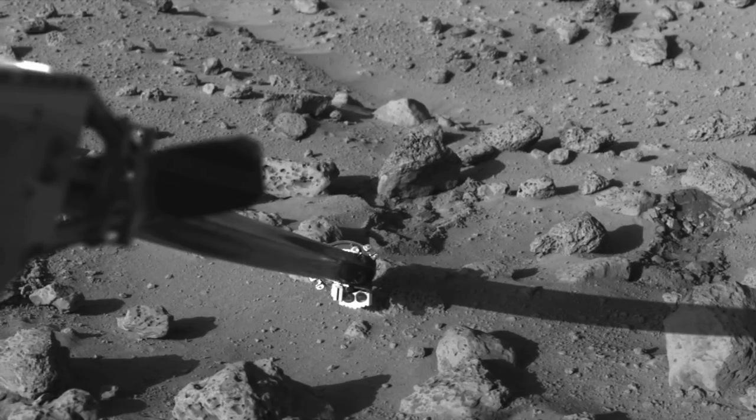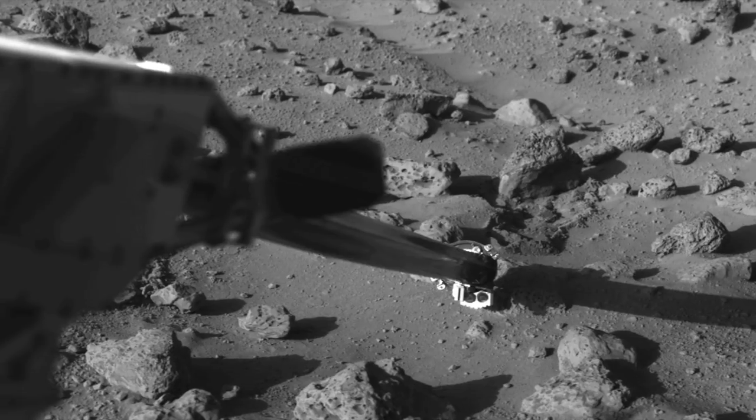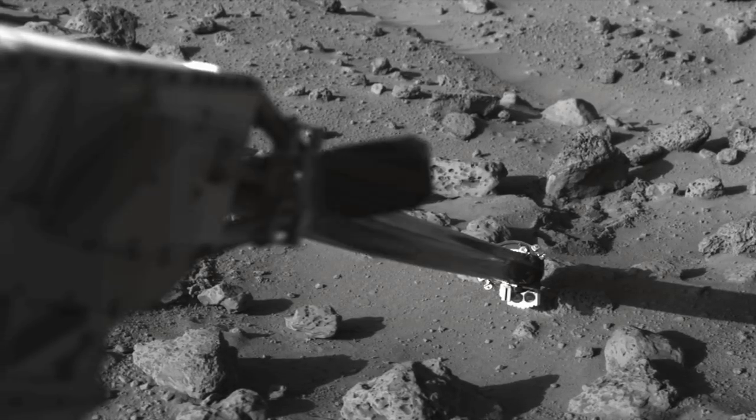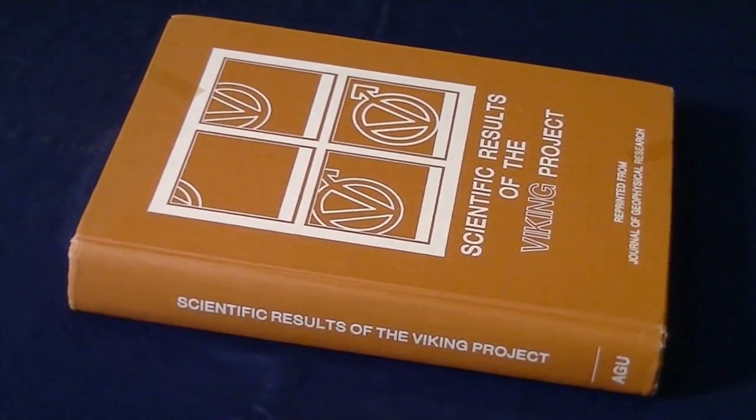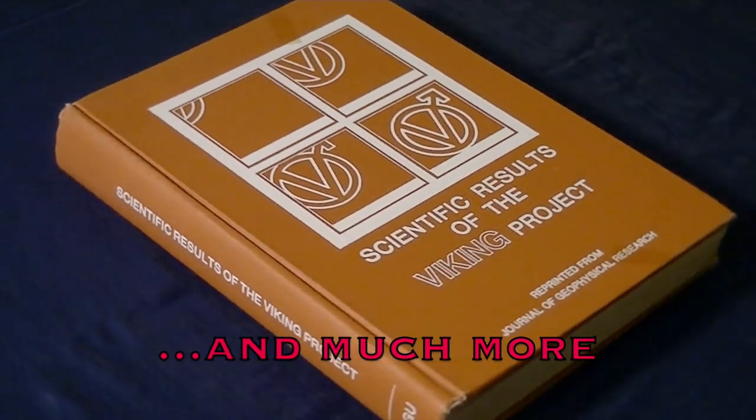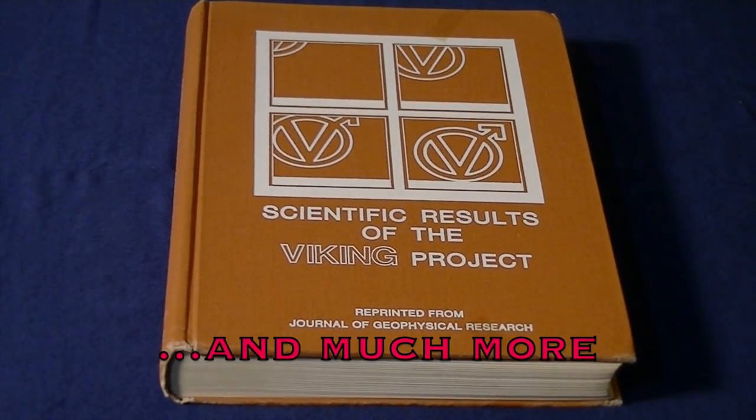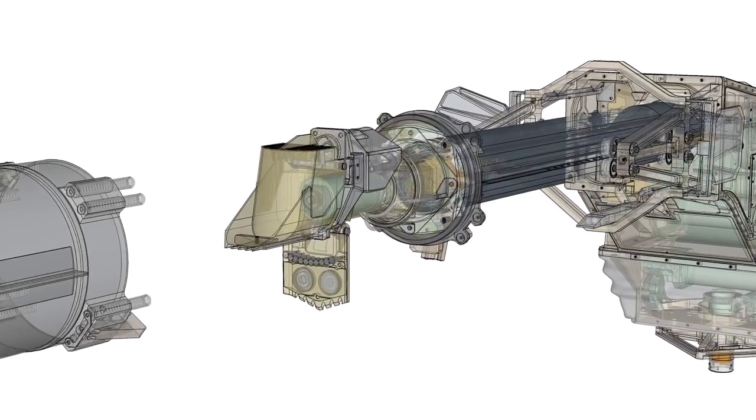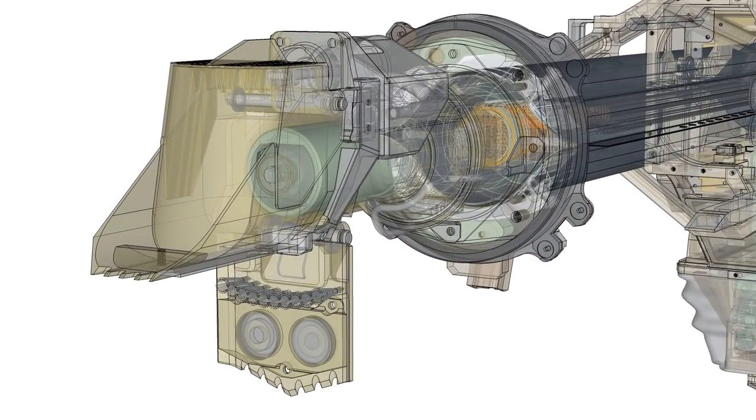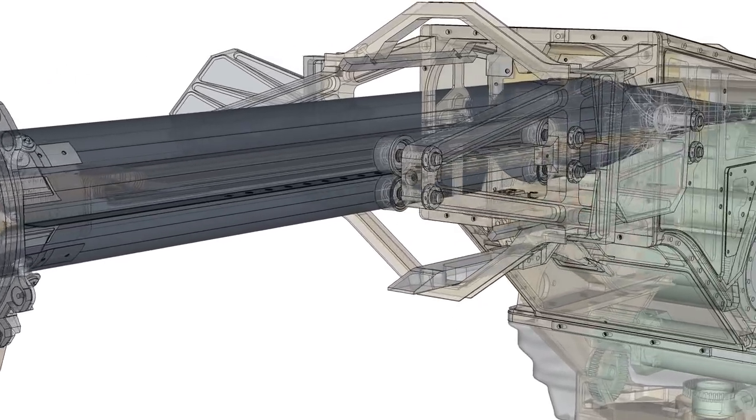The missions of Viking 1 and 2 were triumphs of science, engineering, mission planning and management. Spanning over six operational years orbiting and on the surface of Mars from 1976 to 1982, the two orbiters and two landers yielded a wealth of new information about Mars. Many of those discoveries were made possible due to the Viking Lander Surface Sampler Acquisition Assembly, a remarkable subsystem for a remarkable mission.